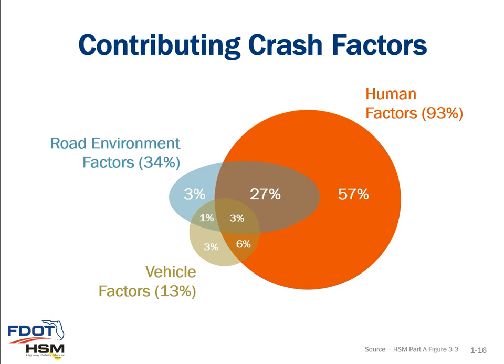A Venn diagram shows various contributing crash factors, including human factors, road environment factors, and vehicle factors. These don't total up to 100% — they're well over 100% — because they show contributing causes. If we know the contributing factors of a crash, we can review alternatives to reduce the risk of that crash occurring again. It is difficult to know the specific cause of a crash, and most crashes cannot be attributed to a single contributing factor. Instead, the crash is the result of a convergence of a series of events influenced by a number of different contributing factors.